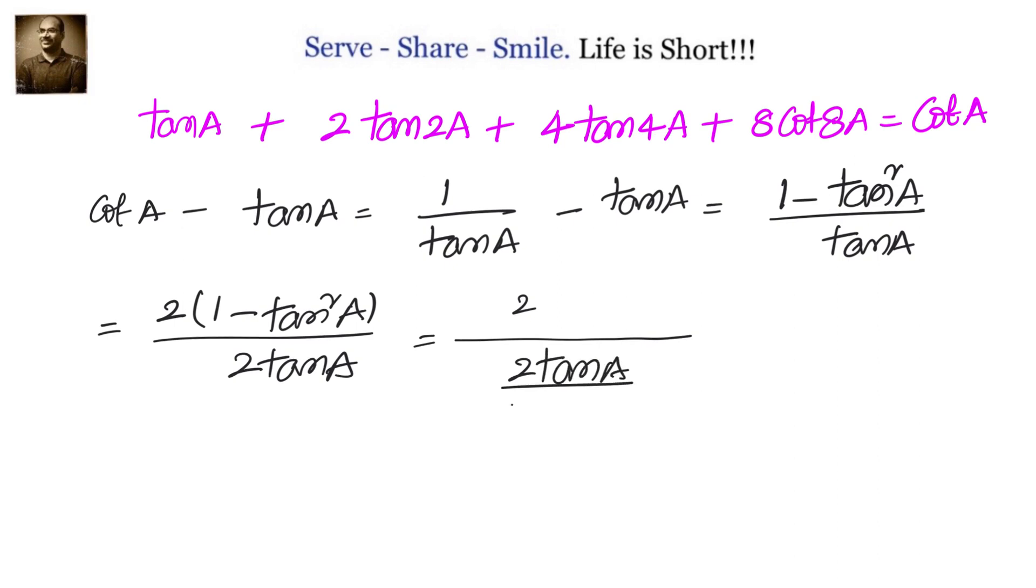Now 2 by tan 2a by 1 minus tan square a equals 2 tan 2a, that is making it 2 cot 2a. So if you do cot a minus tan a which equals 2 cot 2a.